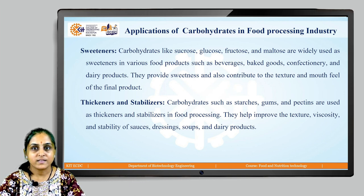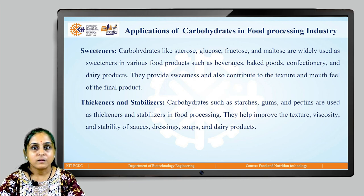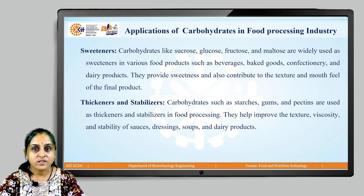Carbohydrates such as starches, gums, and pectins are used as thickeners and stabilizers. They tend to improve the texture, viscosity, and stability of sauces, soups, several bakery products, and dairy products.